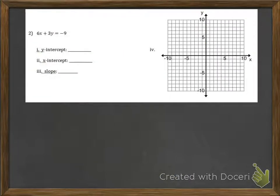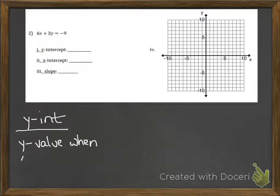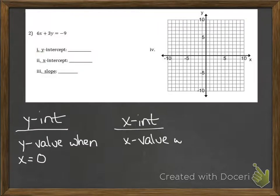In problem 2, we're supposed to identify the y-intercept, x-intercept, and slope, and then sketch a graph. This time the equation is written in standard form, and the quickest way to find the y-intercept in standard form is knowing that the y-intercept is the y value when x is 0. We can use the same idea with the x-intercept, it's the x value when y is 0.